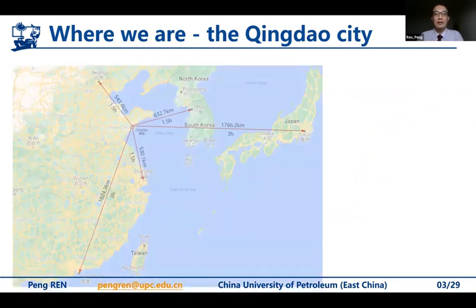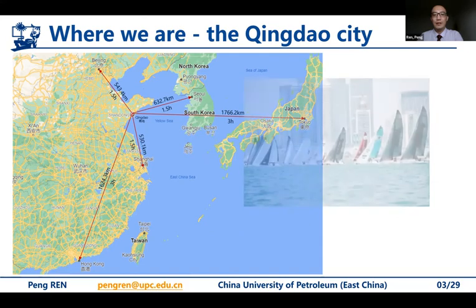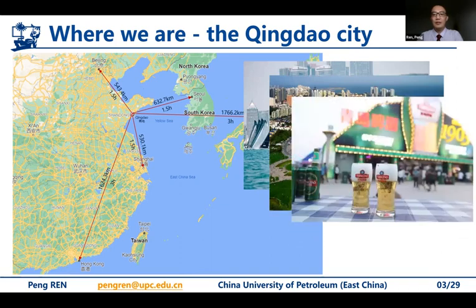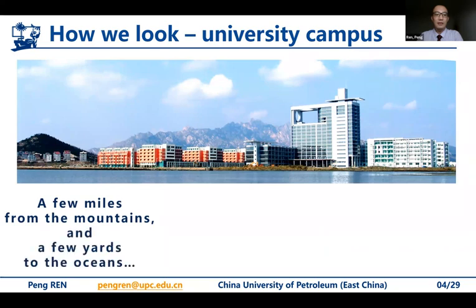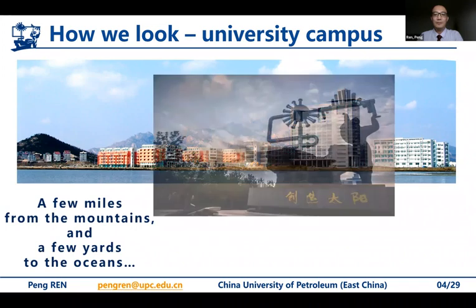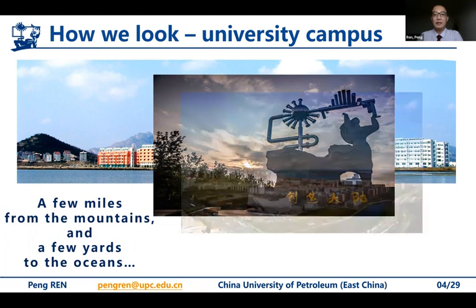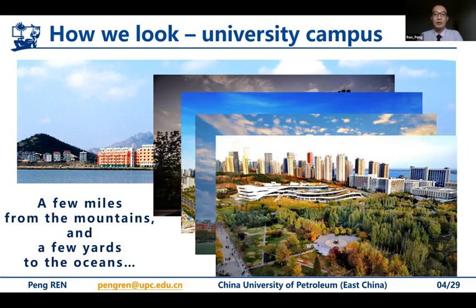We are in Qingdao city. It takes one and a half hours to Beijing, Shanghai, and Seoul by flight, and three hours to Hong Kong and Tokyo. It is a good place for sailing, has beautiful coastlines, and is famous for traditional beer. This is a picture of my university campus — we are a few miles from the mountain and a few yards to the ocean. This is the symbolic sculpture of my university called 'Creating the Sun.' You are welcome to visit.